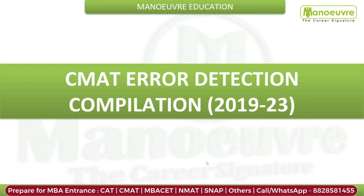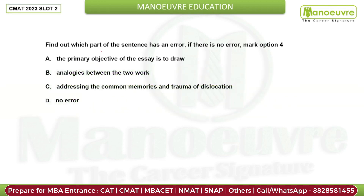Welcome to Binary Education. In this video we will discuss CMAT compilation — specifically error detection from the last five year papers of CMAT. Starting with the first question: find out which part of the sentence has an error. If there is no error, mark option 4.